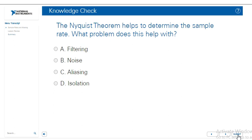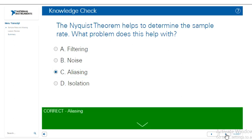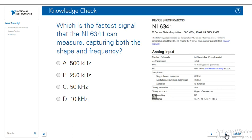The Nyquist theorem helps to determine the sample rate. What problem does this help with? The answer is C, aliasing.